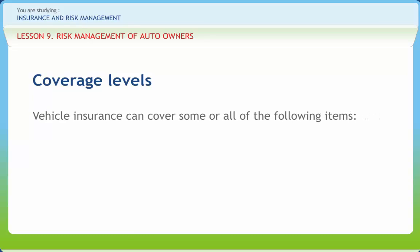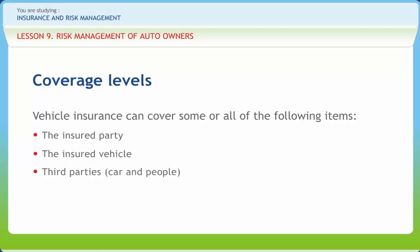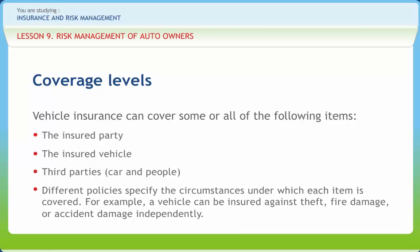Vehicle insurance can cover some or all of the following: the insured party, the insured vehicle, and third parties' car and people. Different policies specify the circumstances under which each item is covered. For example, a vehicle can be insured against theft, fire damage or accident damage independently. An excess payment, also known as a deductible, is the fixed contribution you must pay each time your car is repaired through your car insurance policy. A compulsory excess is the minimum excess payment your insurer will accept. Minimum excesses vary according to your personal details, driving record and insurance company. You may offer to pay a higher excess than the compulsory excess in order to reduce your insurance premium.